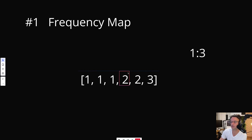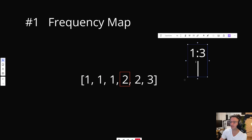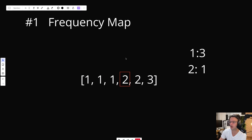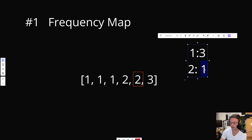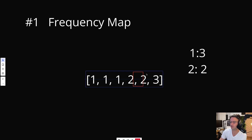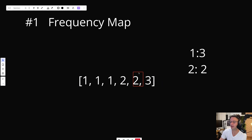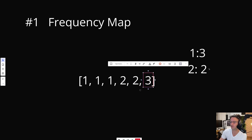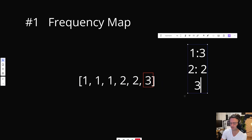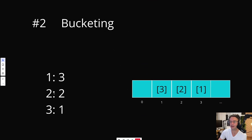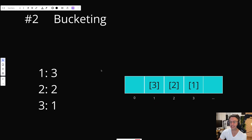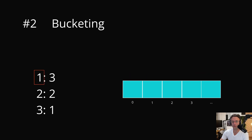Then when we get to the 2, we do the exact same thing — keep track of the frequency. 2 occurs 2 times. And then once we get to 3, that's the final number and our frequency is just 1. Once we're done with the frequency map, we can move on to what's called bucketing, which is an incredibly simple process.